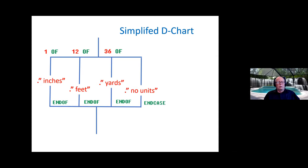Simplifying the D chart, the original D chart shows the logic. This is a little clearer. And so we see that there are three choices at the beginning, the 1 of, 12 of, and 36 of. And remember, they're not done in parallel, as one might assume. They're actually done serially. And in the outputs, you have inches, feet, yards, and no units.